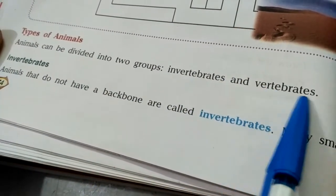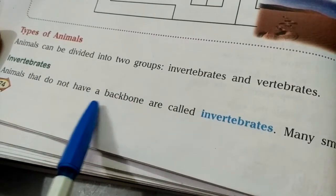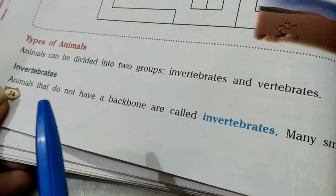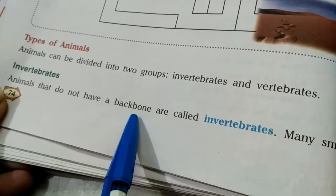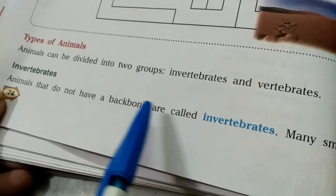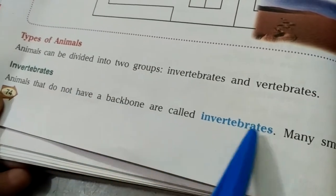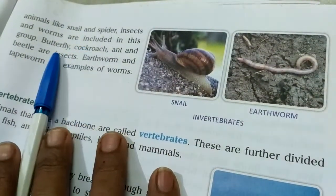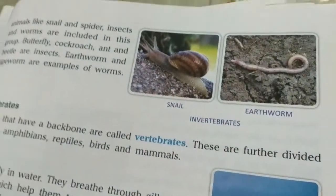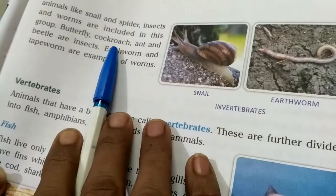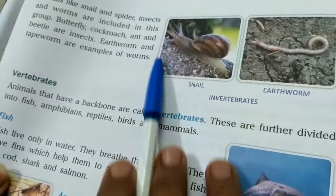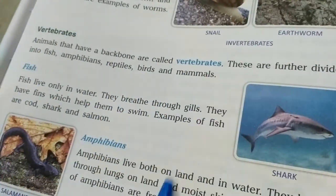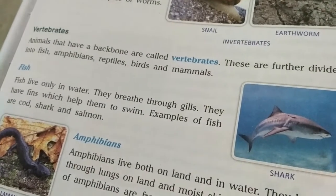Animals can be divided into two groups: invertebrates and vertebrates. Animals that do not have a backbone are known as invertebrates. Human beings have a backbone — also called the vertebral column or spinal column. Many small insects and worms are invertebrates, like snails, spiders, insects, and worms.